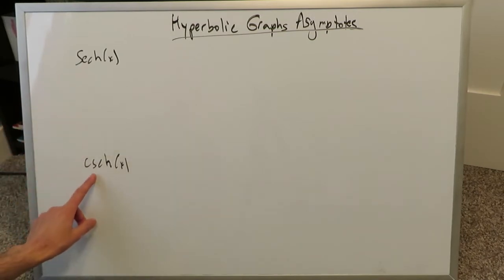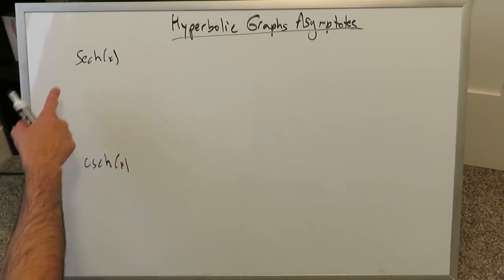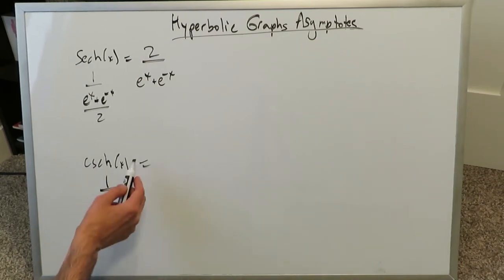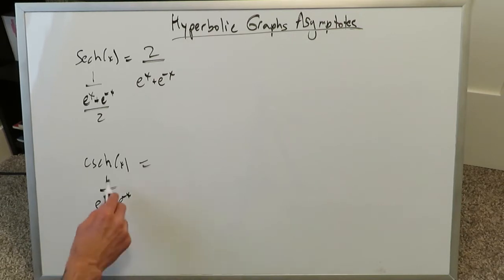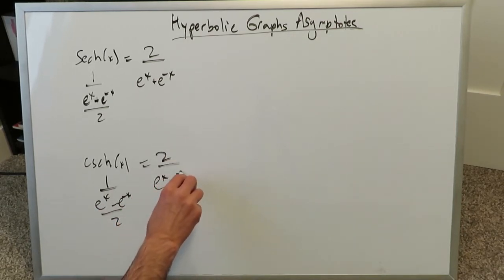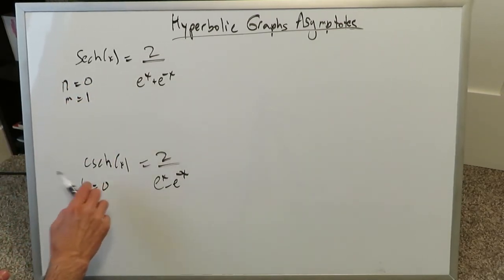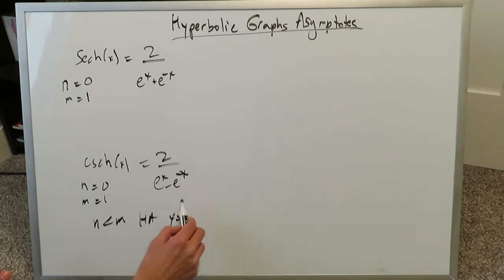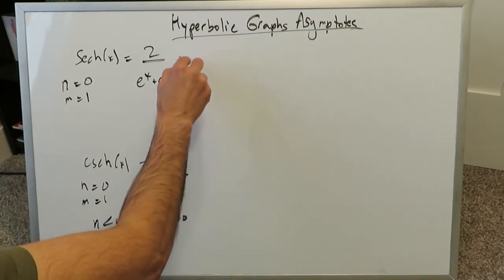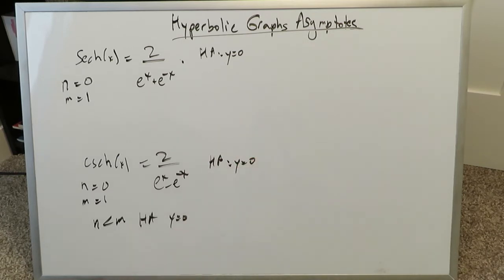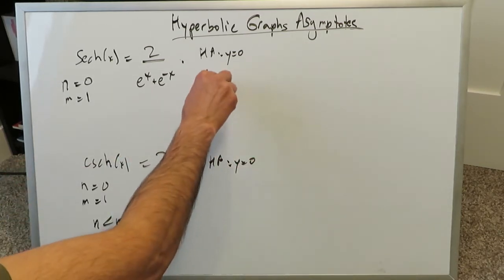The hyperbolic secant and hyperbolic cosecant are more interesting. Sech(x) is the reciprocal of cosh(x), giving 2 over (e^x plus e^(-x)), and csch(x) is the reciprocal of sinh(x), giving 2 over (e^x minus e^(-x)). In these cases, the highest order degree in the numerator is 0 and in the denominator is 1. Whenever n is less than m, you have a horizontal asymptote of y equals 0 — which applies to both functions.